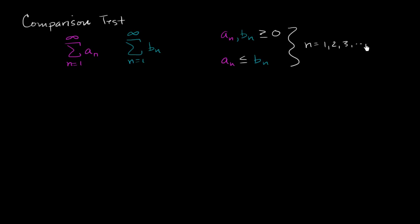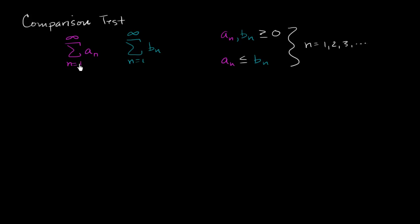So the comparison test tells us that because all of the corresponding terms of the a sub n series are less than the corresponding terms of the b sub n series, but greater than zero, if the larger series — b sub n — converges, then the smaller one, which is bounded by it, must also converge.